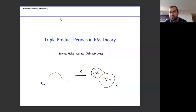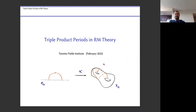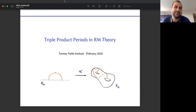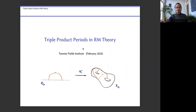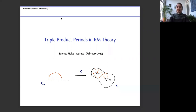It's my pleasure to introduce Dan Wong from Leiden University, and he's going to speak about triple product periods in RM theory. Thanks very much, Peiman, and thanks everyone for being here today. It's always really fun to speak to a Canadian audience — it brings me back to those days when I was a postdoc in Montreal.